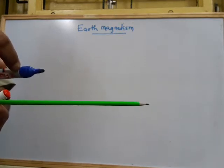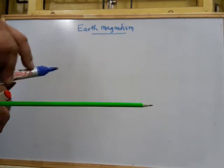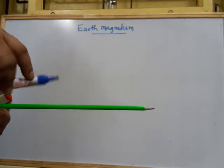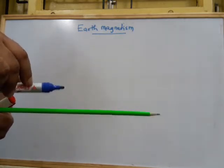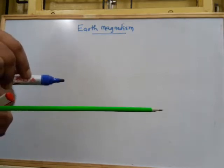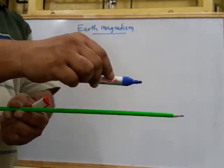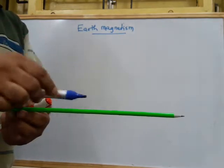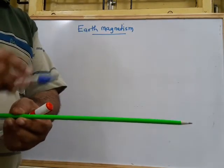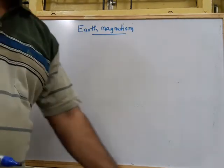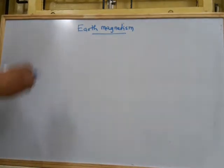The dipole will oscillate initially, but after some time it will come to a steady state position. In the steady state, the alignment of the Earth's magnetic field and the dipole will be along each other. This is the most important property we observe on the Earth's surface.